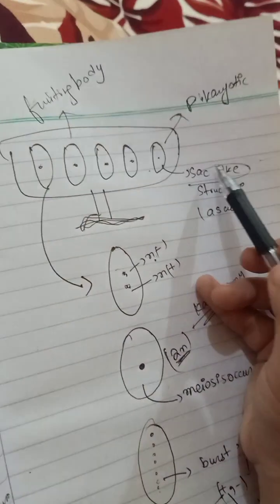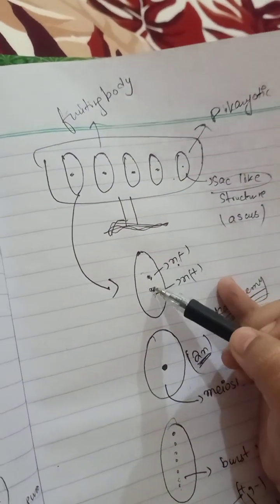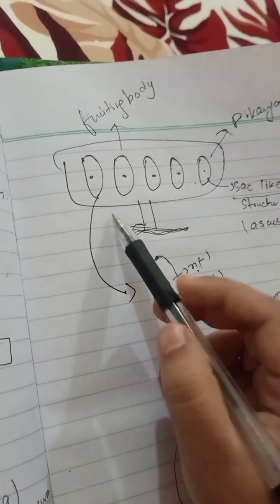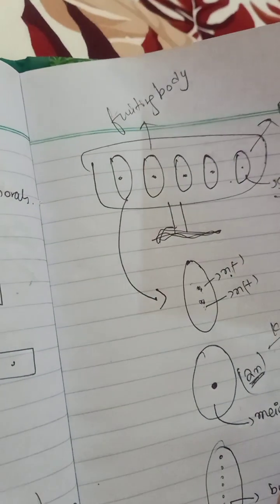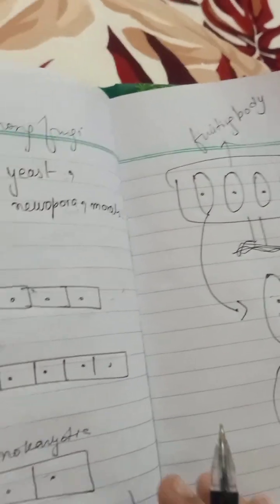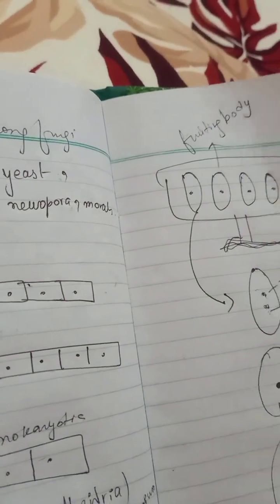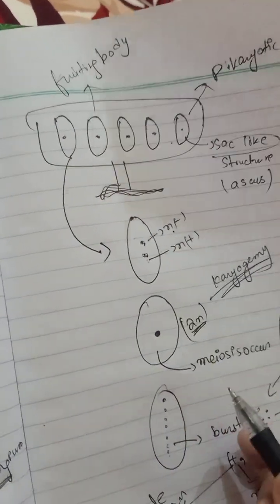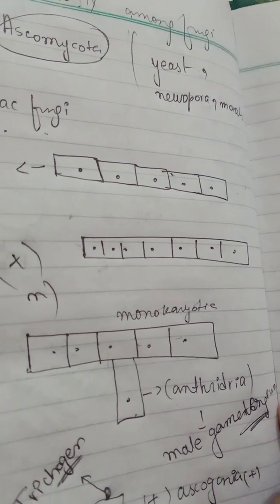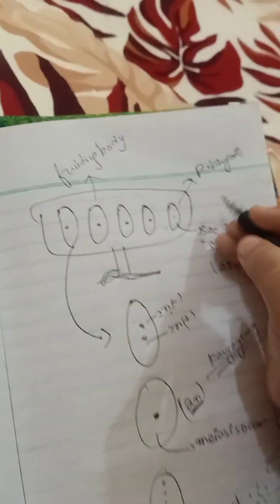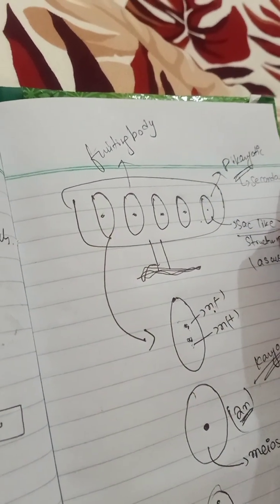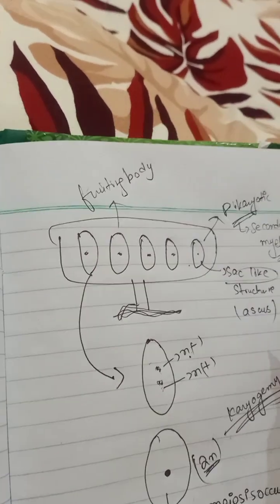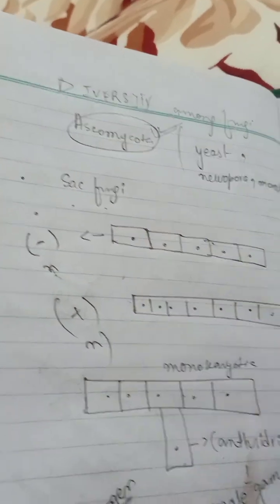To summarize: this group is called sac fungi because of the ascus structure. Sexual spores are produced inside the asci. This is a septate fungi, having cross walls. Asexual reproduction occurs through conidia, fragmentation, and budding. Proper gametangia are developed — the antheridium (male) and ascogonium (female). The secondary mycelium formed is dikaryotic, also called secondary mycelium. This dikaryotic stage is characteristic of Ascomycota.